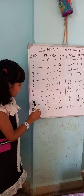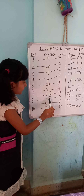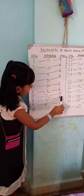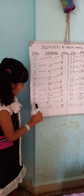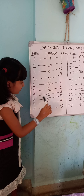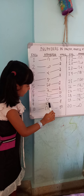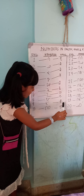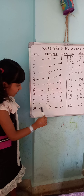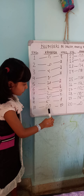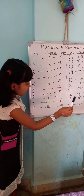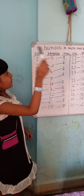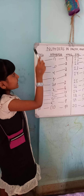8. In Kannada: Into. In Hindi: Aath. 9. In Kannada: Umbattu. In Hindi: Nau. 10. In Kannada: Hatu. In Hindi: Das.